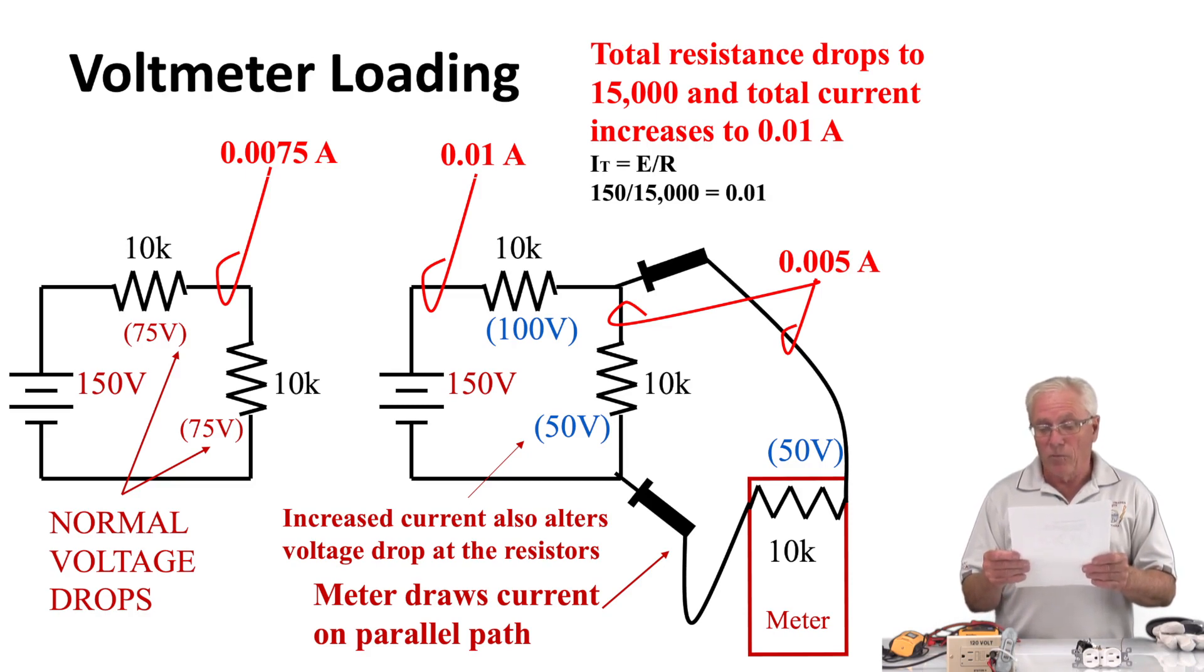We altered the circuit simply by putting the meter on there because of its impedance, its low impedance. Now the meter draws 0.005 amps, and our second resistor is drawing the same, 0.005 amps. If you take a look at what happens because of our current change, we now have 100 volts dropped across the first resistor, and the second one sees a 50 volt drop. That is radically different from what we had on normal circuit operation. Additionally, we have changed the milliamp load on the circuit.